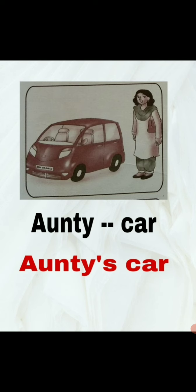The next example is Auntie car. Again there are two words. The first word is Auntie — you can see the picture of Auntie — and the next is Car, which is the object. You are going to write Auntie's car: A-U-N-T-Y apostrophe S, Car C-A-R.